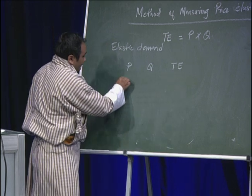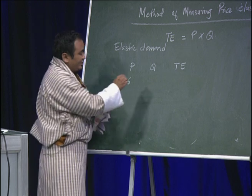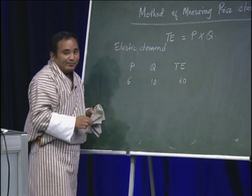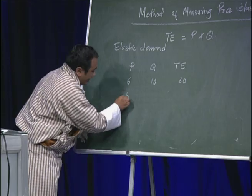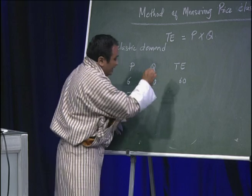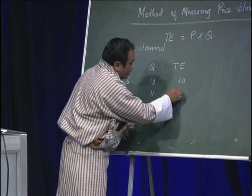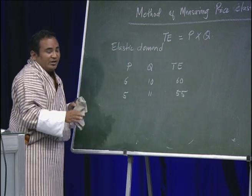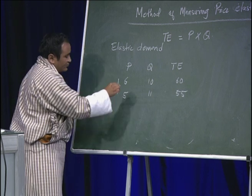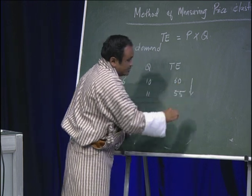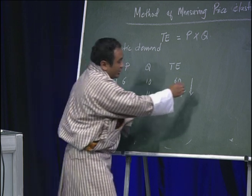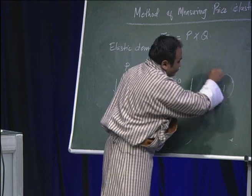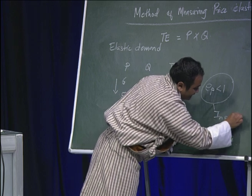For example: when price is Nu 6 and quantity demanded is 10, total expenditure is 6 × 10 = 60. When price decreases to Nu 5 and quantity demanded increases to 11 kg, total expenditure is 5 × 11 = 55. The relationship to keep in mind: when price is decreasing and total expenditure is also decreasing, we conclude that price elasticity of demand is less than 1 — it is inelastic demand.